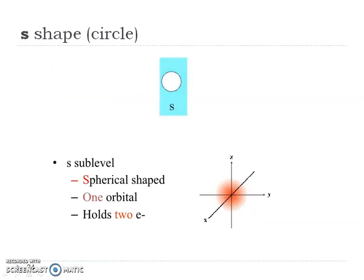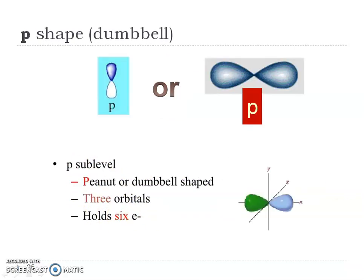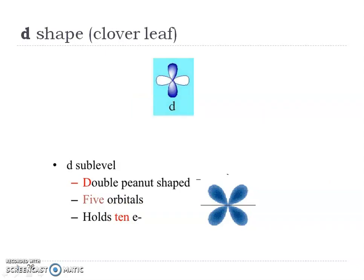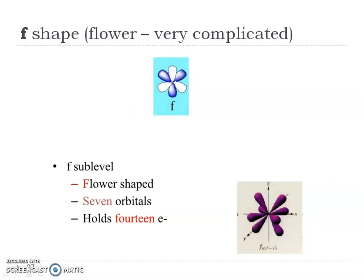In your notes, draw something like this. For the S, just draw a circle. It's also represented by the electron density — where those electrons are most of the time. The S is only one orbital and it's going to hold two electrons. The P is like a dumbbell, and you can see it on the X, Y, and Z axes, so there are three possible orbitals and they hold six electrons total. The D is that cloverleaf, and the F is a flower.